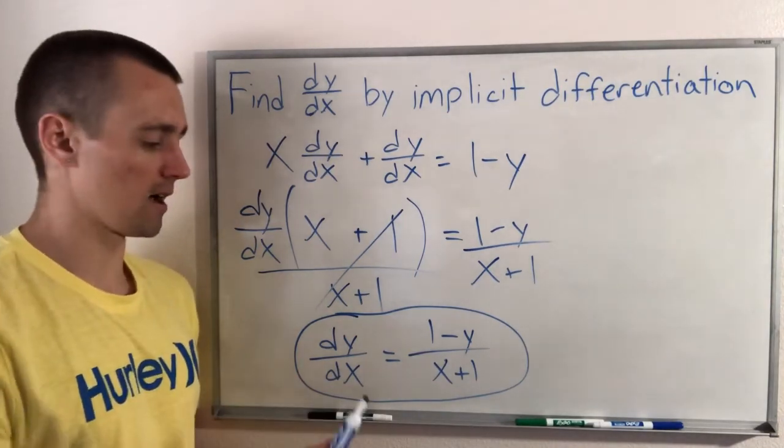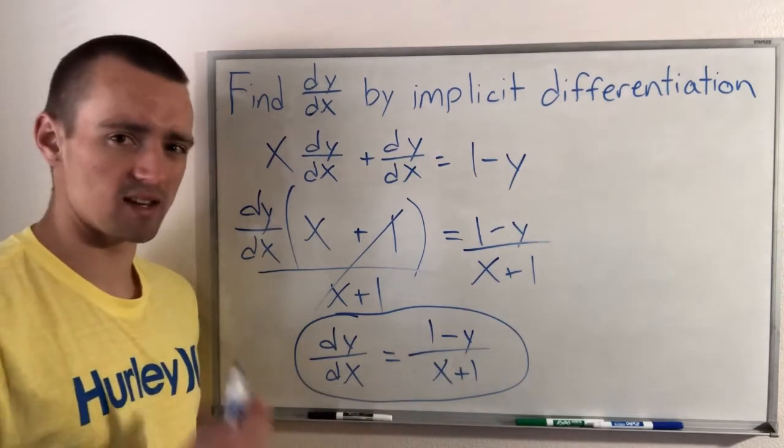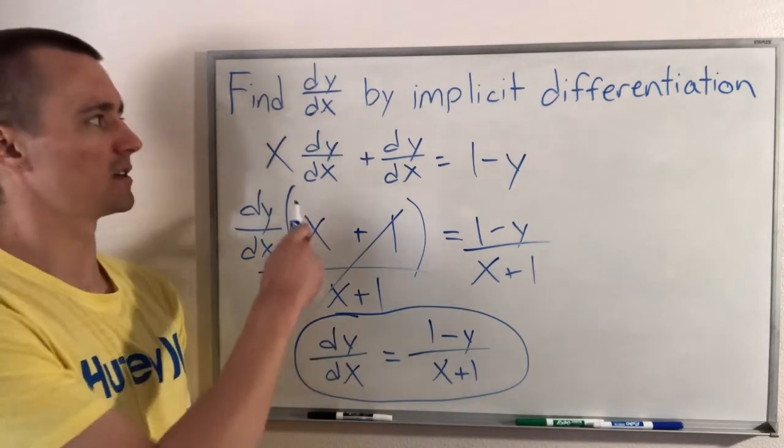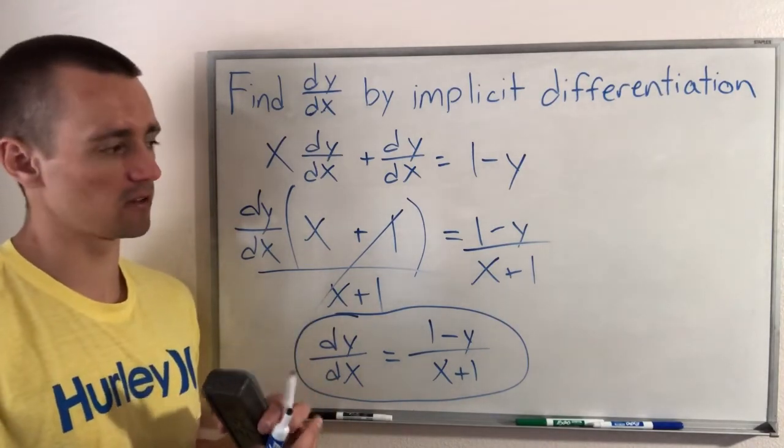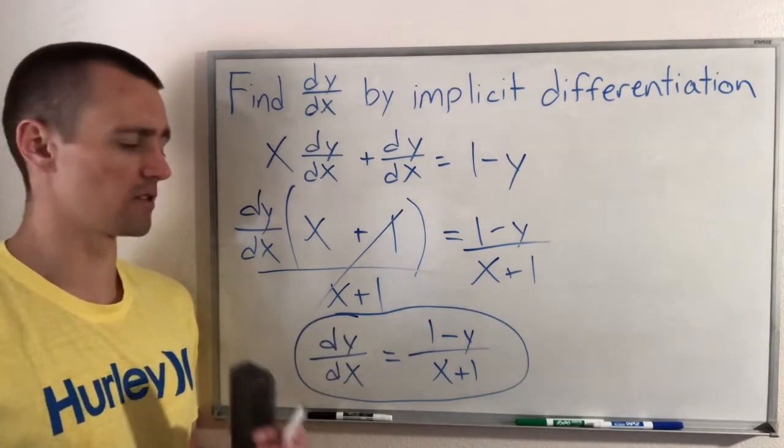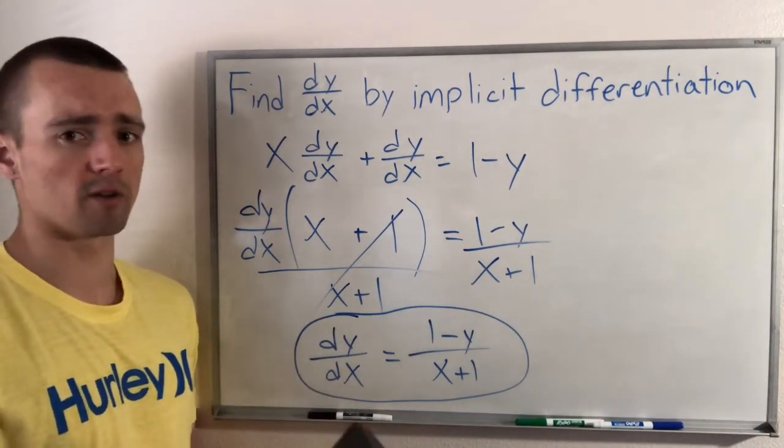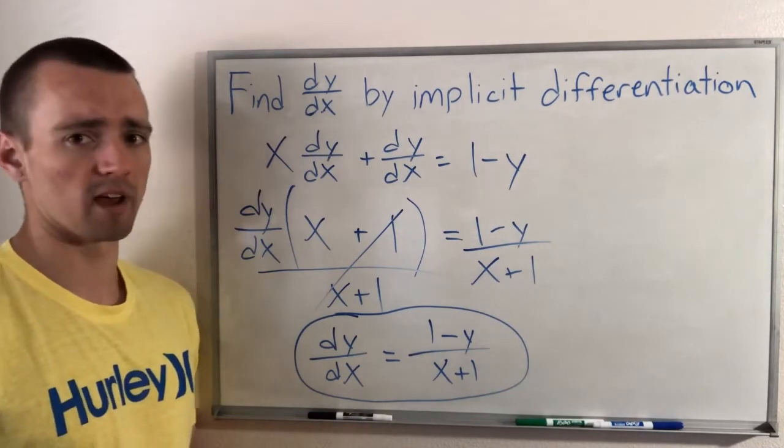So that gives us our dy/dx in terms of x and y. Again, notice we don't have an explicit formula for dy/dx in terms of x, which is what we ideally would like. But the reason for that is because our original equation that we started with, it had a bunch of x's and y's kind of jumbled together. So a lot of times when that happens, the best you can do to find the derivative of y is going to be in terms of x and y instead of just x. So that's what we have here.